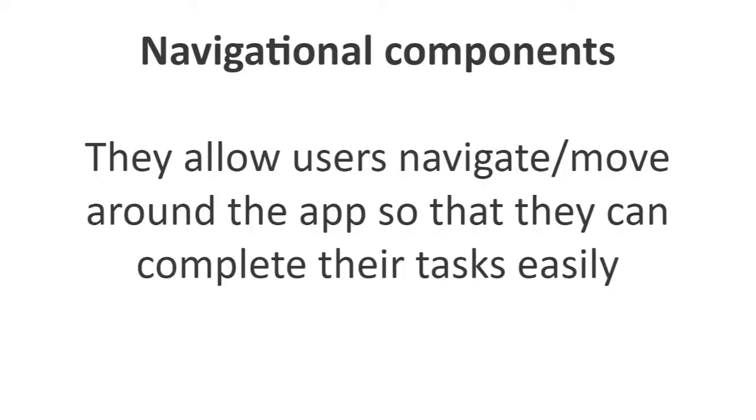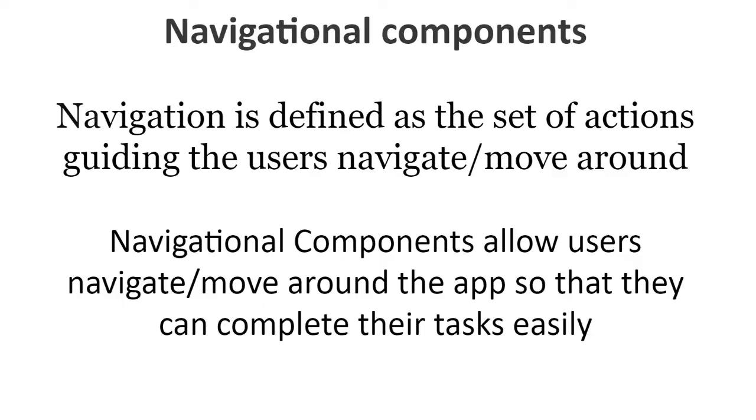Number two is navigational components. What do you understand when I say the term navigation? It means to move around or to be in motion, and for someone to navigate is to find a way and to be in motion in order to get to a place. In the user interface, navigation is defined as the set of actions guiding the users to navigate around the app so that they are able to complete their tasks easily. Users can navigate via different navigational components like links, breadcrumb, menu, tags, icons, and more.